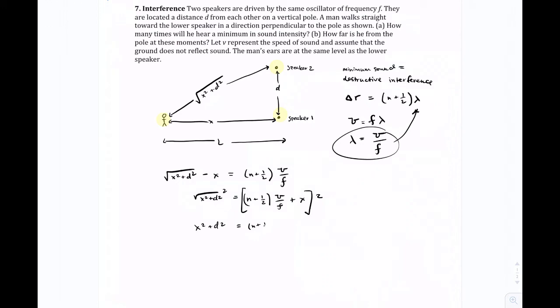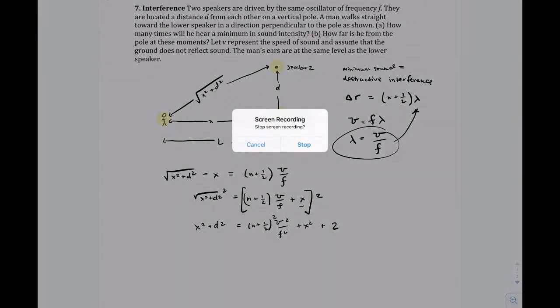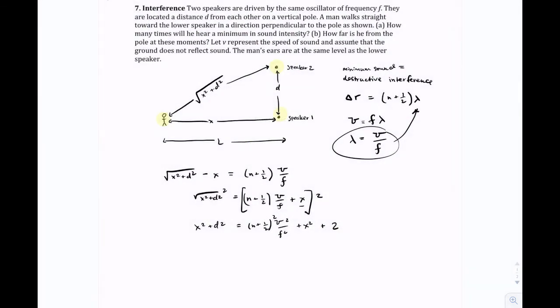N plus one-half squared times V squared over frequency squared. And N plus one-half gets squared. Plus X squared plus 2, because it's this times this plus this times this.